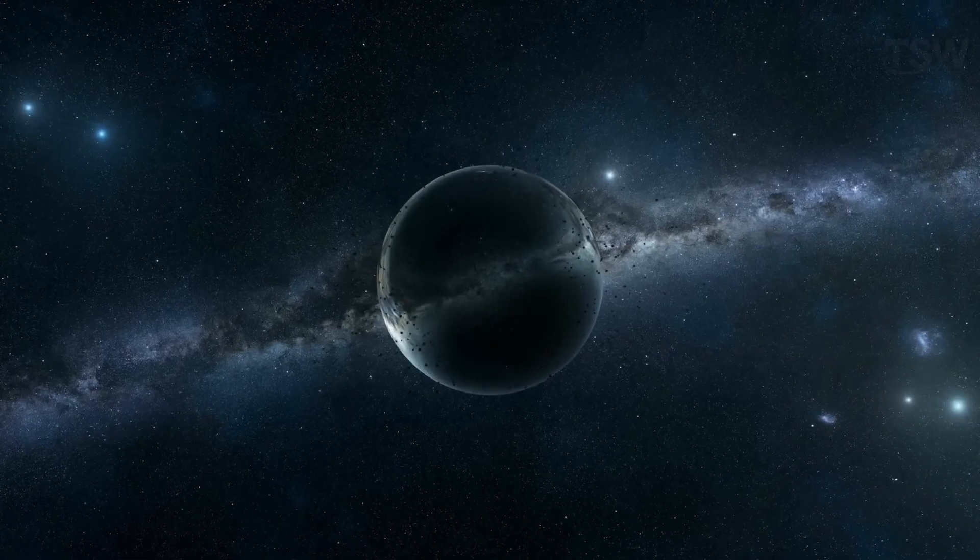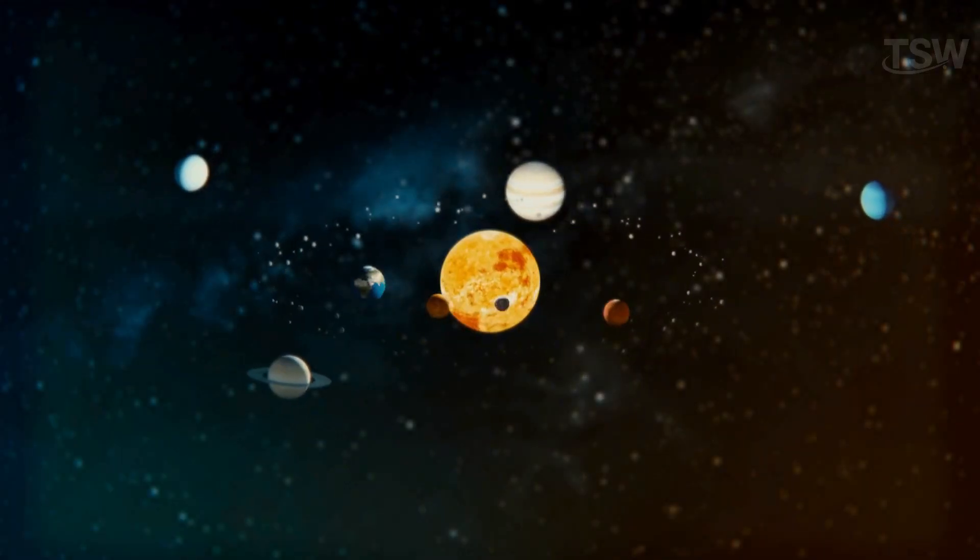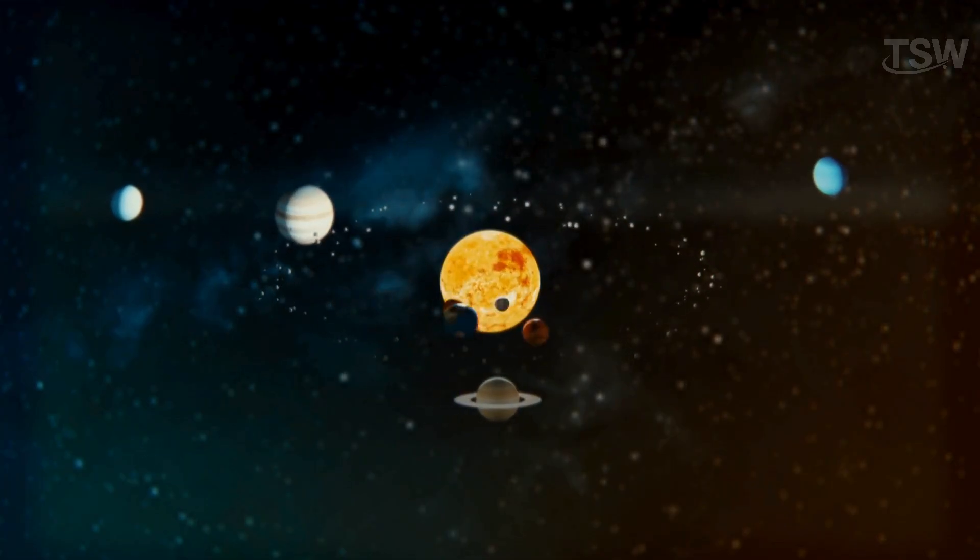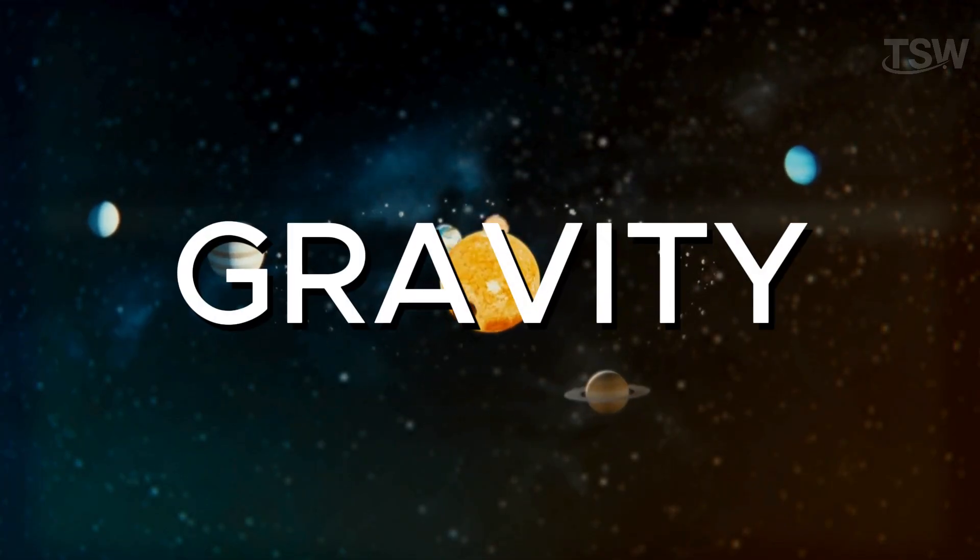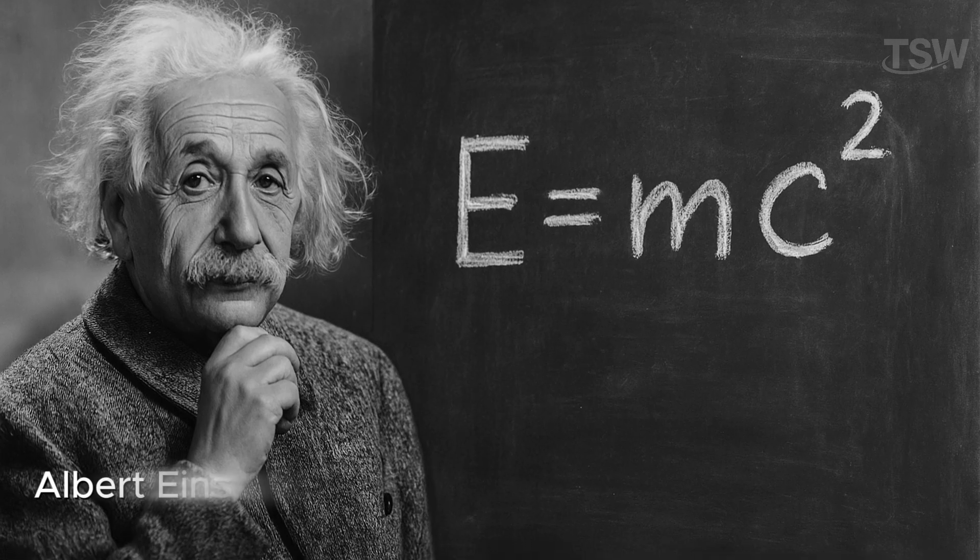You've probably noticed that space can be both fascinating and terrifying, but what truly governs everything, from the orbits of planets to the path of light, is something invisible yet relentless — gravity. To understand how it works, we need to look at the brilliant mind of Albert Einstein.